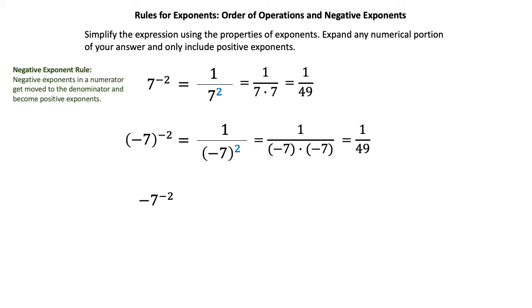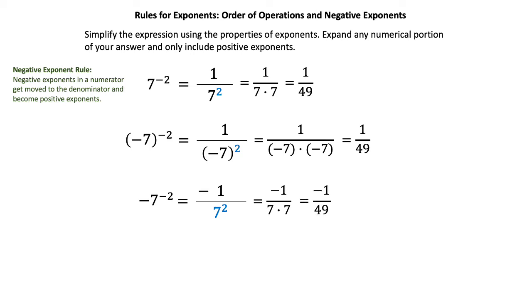In the third example, without parentheses, the negative, the 7, and the negative 2 exponent are all in the numerator, but only the base of 7 moves with the negative 2 exponent to the denominator. The negative stays in the numerator. We change the negative 2 to a positive 2, put a 1 in the numerator, giving negative 1 over 49 — more commonly written with the negative out to the side.